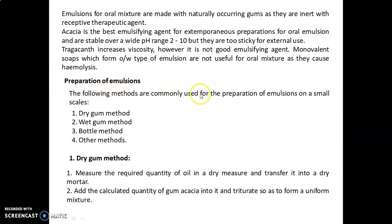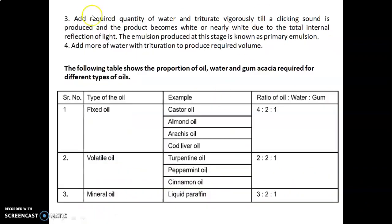For preparation of emulsions on a small scale, the commonly used methods are: dry gum method, wet gum method, bottle method, and other methods. In the dry gum method: first, measure the required quantity of oil and transfer it into a dry mortar; then add the calculated quantity of gum acacia and triturate to form a uniform mixture; then add the required quantity of water and triturate vigorously until a clicking sound is produced.